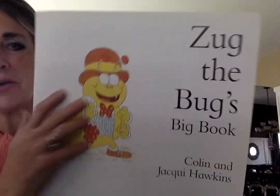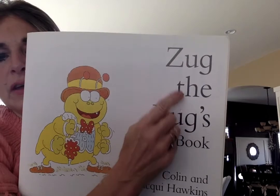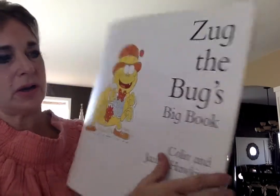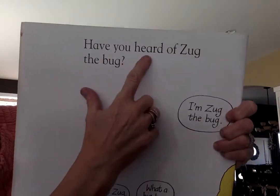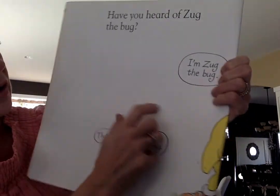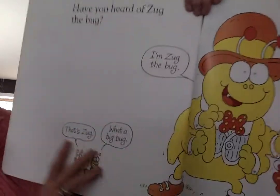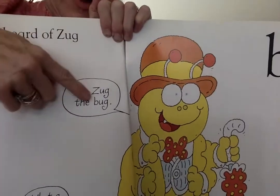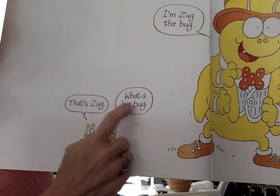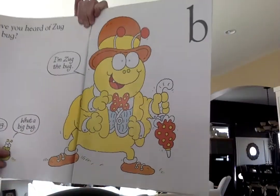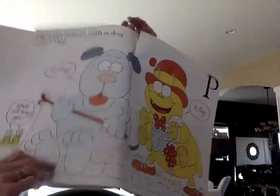That's the end. Let's go back and now we're going to try reading our book. Here we go. We know UGG. Zug the Bugs Big Book. Look at the picture — he is a bug, isn't he? I'm going to look at that and know UGG: bug. Have you heard of Zug the Bug? I'm Zug the Bug. What a big bug. Isn't he a big bug? Wow. I don't want one of those in my house.